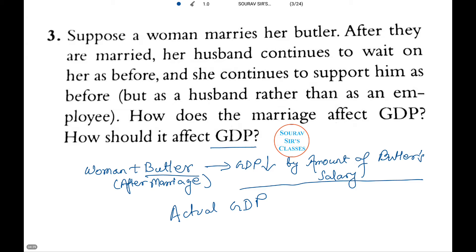As this example illustrates, GDP does not include the value of any output produced in the home. Similarly, GDP does not include other goods and services such as imputed rent on durable goods and any illegal trade.